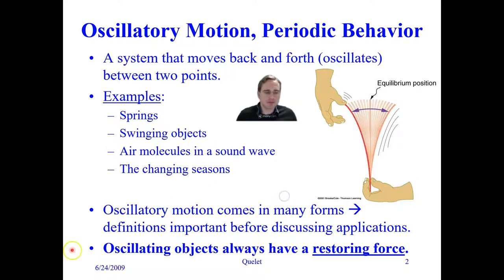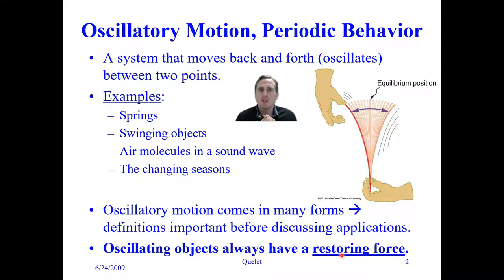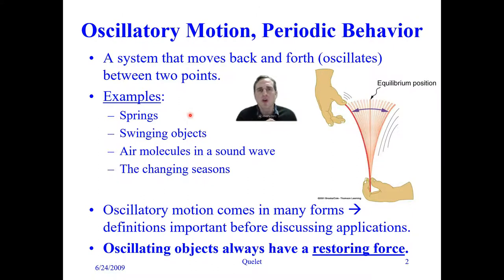Oscillatory motion comes in many forms, and the definitions are important before discussing applications. One thing I want to emphasize is that these objects always have what we call a restoring force. There must be a restoring force for there to be oscillatory motion. For springs, the spring force — the Hooke's Law spring force — is what brings the object back towards equilibrium when it is displaced.